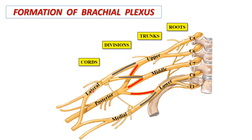Such cords give rise to the branches of the brachial plexus. This means the brachial plexus consists of roots, trunks, divisions, cords, and branches.